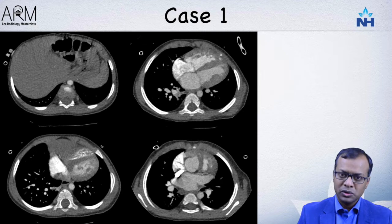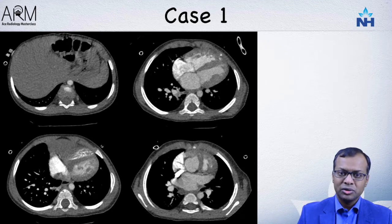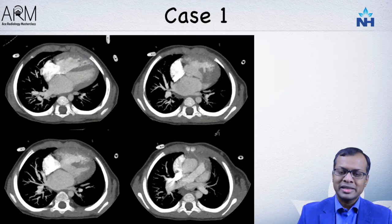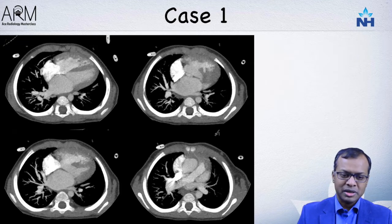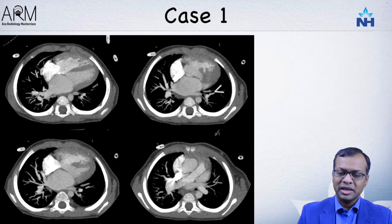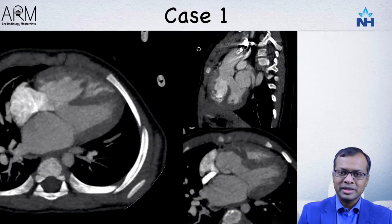As part of the situs assessment, it is also useful to look at the lung anatomy, making sure the right trilobed lung is on the right side and the left bilobed lung is on the left side. The next step is to look at the pulmonary venous return. It is important to track each individual pulmonary vein to confirm it is draining into the left atrium. Here you can see the right inferior, right superior, left inferior, and left superior pulmonary veins all draining into the left atrium.